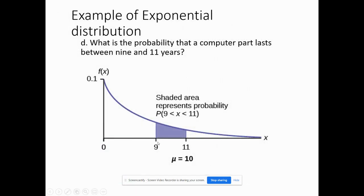And here is the graph. So here's 9, here's 11 – I'm looking for that area. It looks a lot like what we did with the uniform, but the difference is we have a different formula and it's a different distribution.